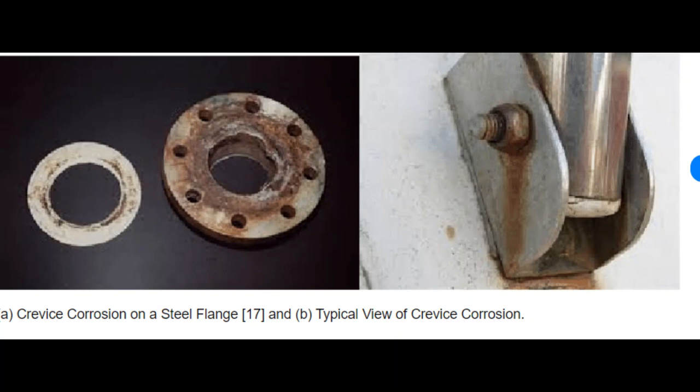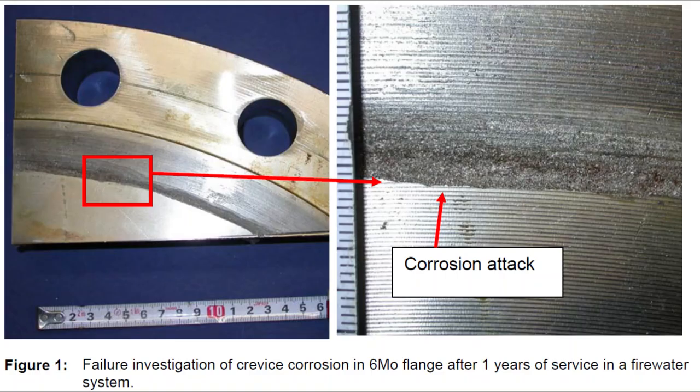This figure illustrates crevice corrosion in a steel flange due to the wrong selection of a gasket. The right-side figure shows a typical view of crevice corrosion. Another figure shows a failure investigation of crevice corrosion on a six-molybdenum flange after one year of service in a fire water system. The left side shows the overall flange arrangement; the right side shows the crevice corrosion attack on the flange.